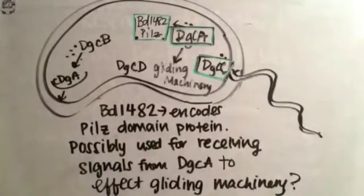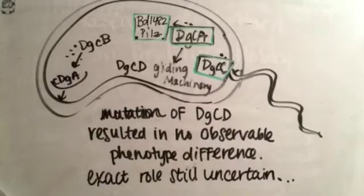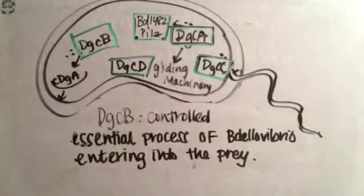BD1482 encoded for PilZ domain protein. This potentially was used to receive signals from gene DgcA to affect gliding machinery. Mutation of gene DgcD resulted in no observable phenotypic difference, and so the exact role for this gene is still a bit uncertain.